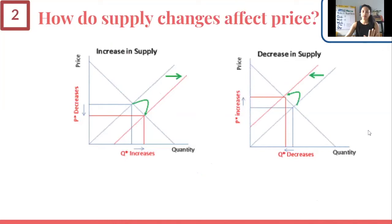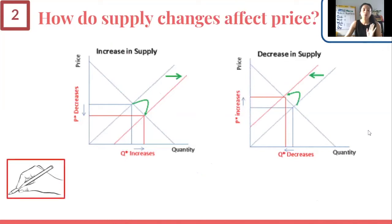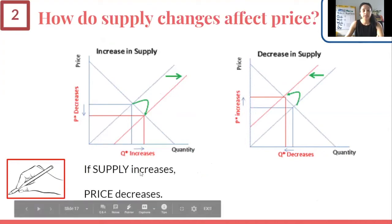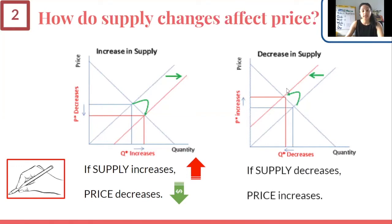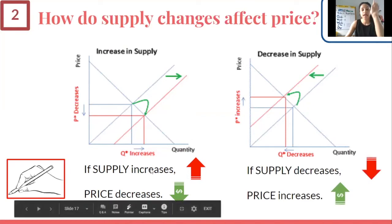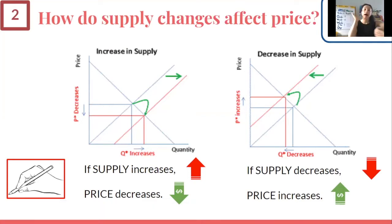Let's talk about supply again. We see two charts: one showing an increase in supply and the other showing a decrease. Write this down: if supply increases, price will decrease. Remember, if supply increases, my new equilibrium point is a lower price. And if supply decreases, my price increases. So supply and price have an inverse relationship — they do the opposite things.